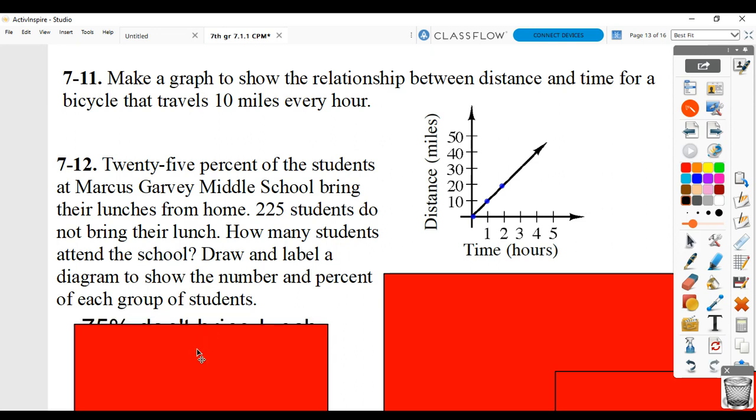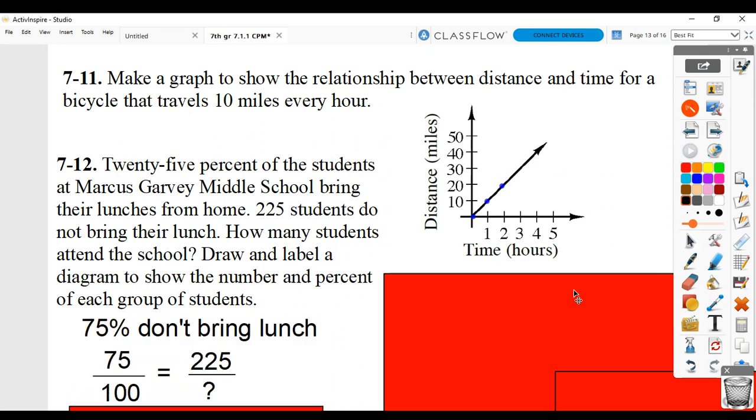There's a couple different ways you could go at this. One is that if 25% do bring their lunch, then 75% must not be bringing their lunch. That 75% represent 225 students who do not bring their lunch. So 75 out of 100 is equal to 225 out of our total number of students.